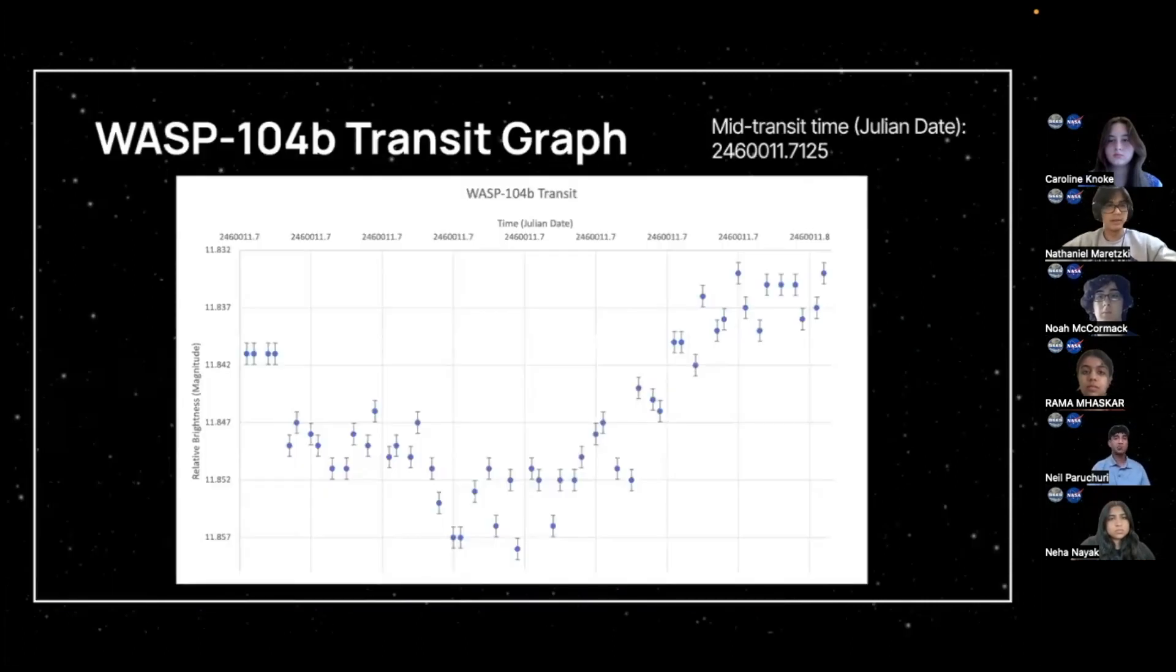So, here are our results. This is the one from the last slide. This is WASP 104b, and the mid-transit time that we got in Julian date was 2460011.7125.